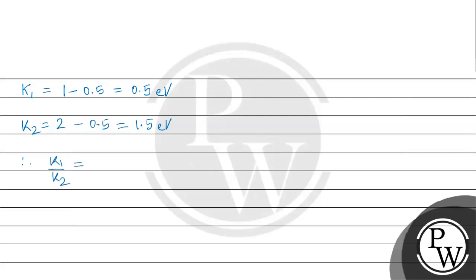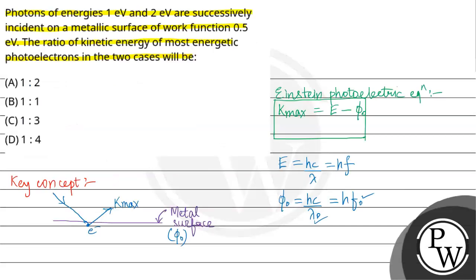Therefore, K1 by K2 equals 0.5 by 1.5, which is 1 by 3, giving a ratio of 1:3. The final answer is option C, 1:3. I hope you understand it well. All the best.